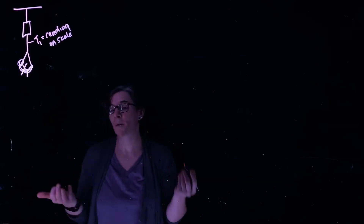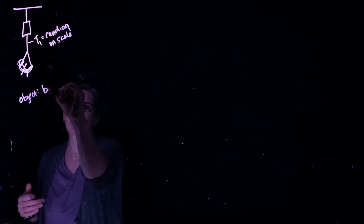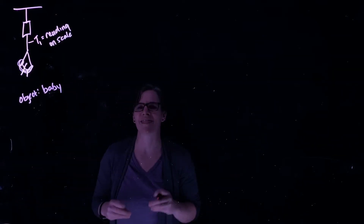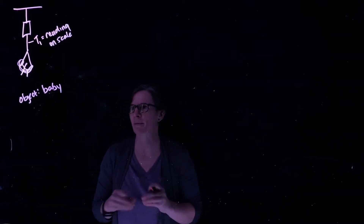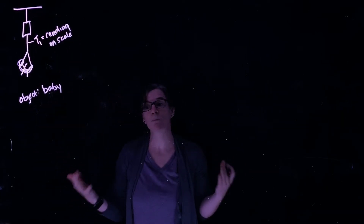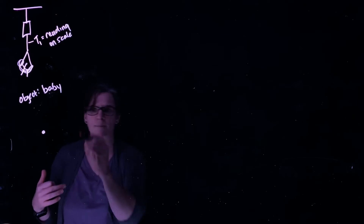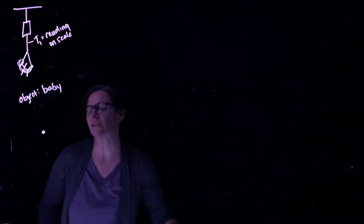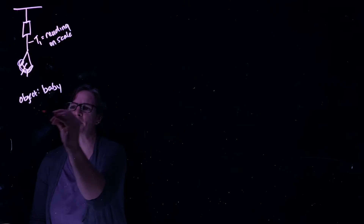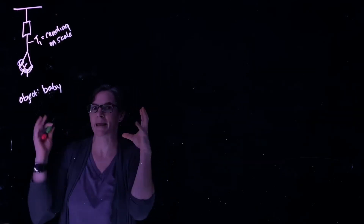For Part A, our object is the baby and the sling—we're going to call that just one object, the baby and the sling. Here's our picture. If we drew a free body diagram of the baby, we should first consider what the forces are acting on this baby.